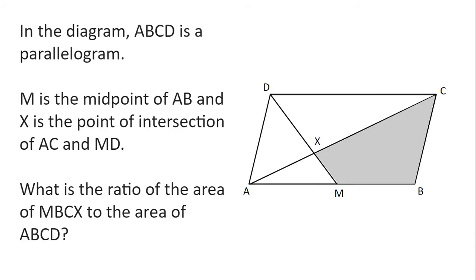In the diagram, ABCD is a parallelogram. M is the midpoint of AB and X is the point of intersection of AC and MD. What is the ratio of the area of MBCX to the area of ABCD?